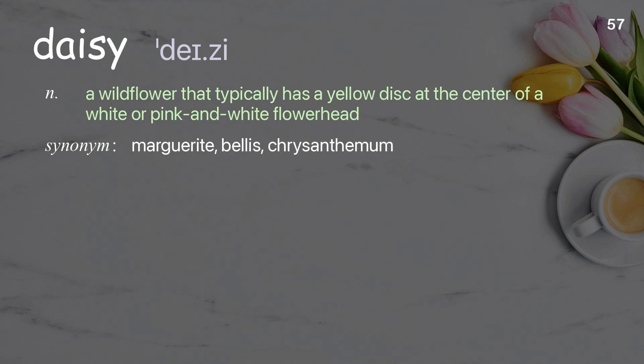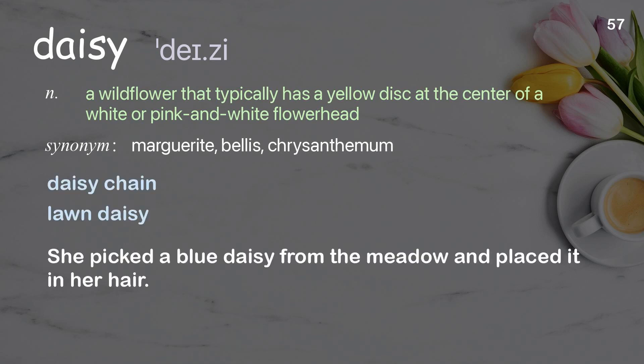Daisy: a wildflower that typically has a yellow disc at the center of a white or pink and white flower head. She picked a blue daisy from the meadow and placed it in her hair.